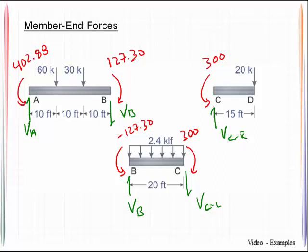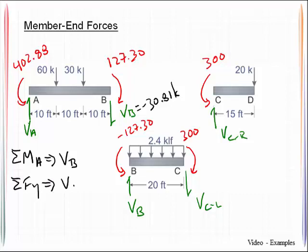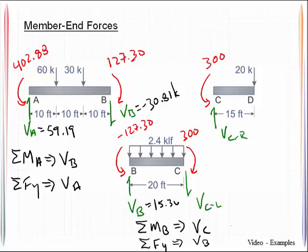Okay so keep that in mind and I will come back here to member AB. I'm going to solve for those unknown shears. I'm going to sum moments about A and that will tell me what VB is. If I do that it computes out to be negative 30.81 kips. Then I can sum forces in the Y and that will then solve for the value of shear at A which computes out to be 59.19. In a like fashion I will sum moments about point B and that will give me the shear at C. And then I will sum forces in the Y direction and that will give me VB. Let's go ahead and write those quantities in. 15.36 and this will compute out to be negative 32.64 kips.